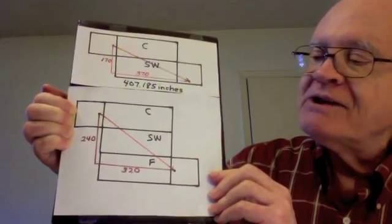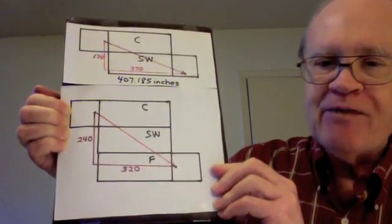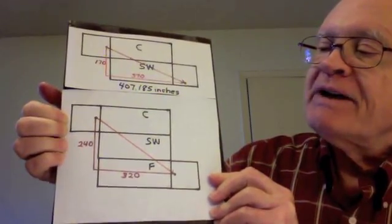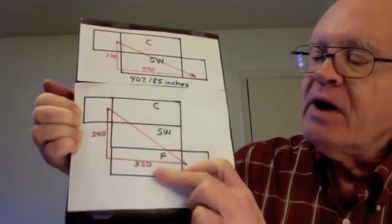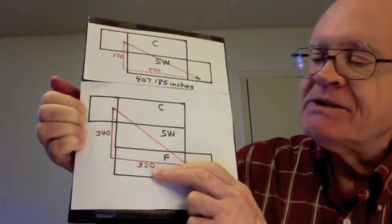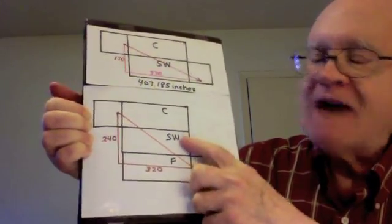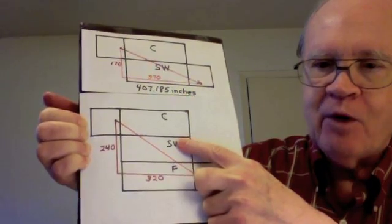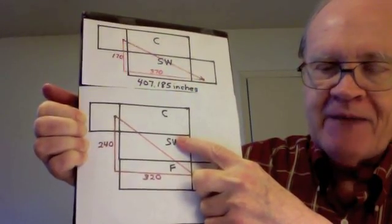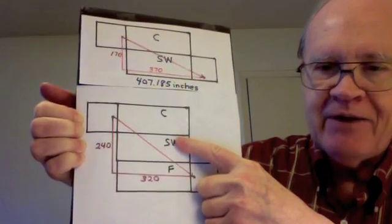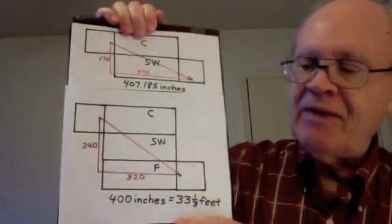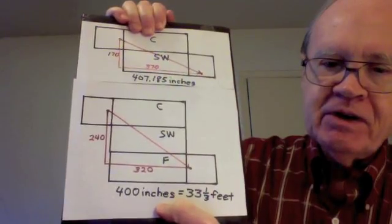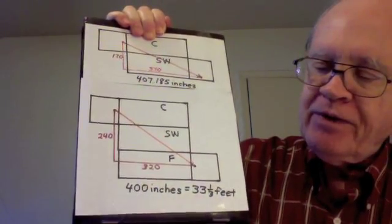Or we can suspect that this is a 3-4-5 right triangle. And indeed it is. 3 times 80 is 240. 4 times 80 is 320. 5 times 80 is the length of the hypotenuse. 5 times 80 is 400. Either by that method or by using the Pythagorean equation, we determine that the length of this path is exactly 400 inches, which is 33 and 1 third feet.